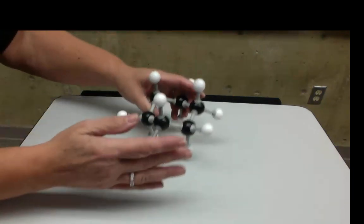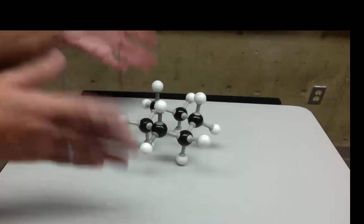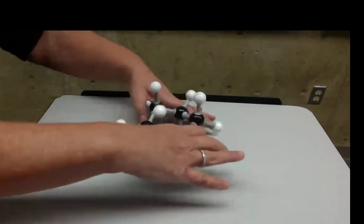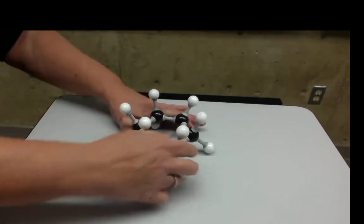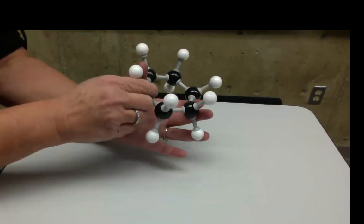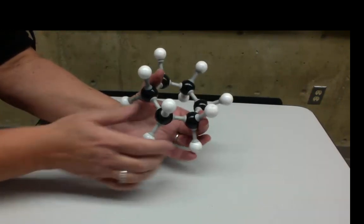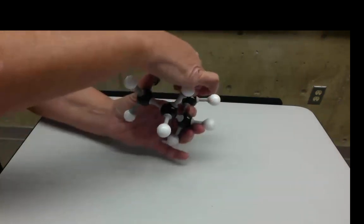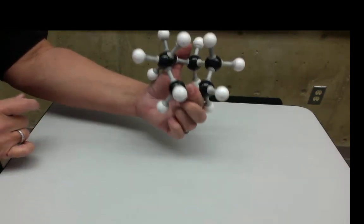To convert it from the boat to the chair, go ahead and start at the starting position, start it flat. Holding two of the bonds across from each other, pull both sides up in this case. And there you will have the boat.